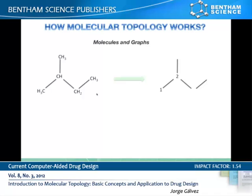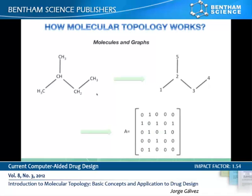First, label with an ordinal number each of the graph vertices. Then the matrix is constructed so that any entry Aij has the value 1 if there is an edge or link between vertices i and j, otherwise it is 0. By mathematically manipulating the matrix, we get topological indexes, which are also called graph invariants, since their value must not change for isomorphic graphs.